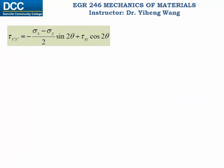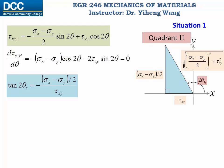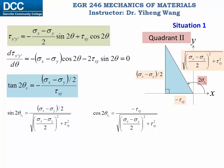Now we apply the same analysis to the shear stress function. We take the derivative of this function with respect to theta, set it to zero, and solve for theta in terms of tangent(2*theta_s). The subscript S represents shear stress. We visualize the angle 2*theta_s within the four quadrants. First, assume 2*theta_s1 belongs to the second quadrant. Using the reference right triangle we find sine(2*theta_s1) and cosine(2*theta_s1), substitute these into the original function, and solve for tau_s1.